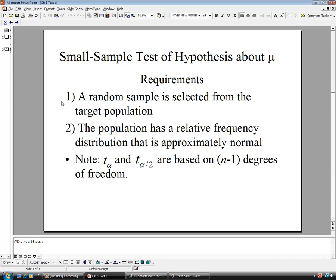The requirements for that are a random sample selected from the target population. That's going to be pretty standard. That's what we're going to need for all of these. Second thing is the population has a relative frequency distribution that is approximately normal. So we have to know that the distribution we're pulling from is approximately normal.